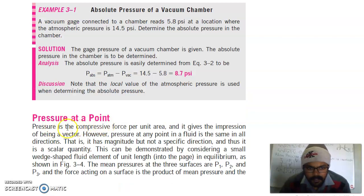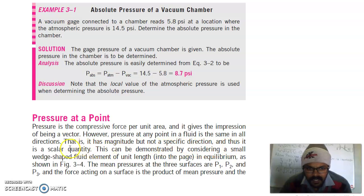Pressure at a point. Pressure is compressive force per unit area, and it gives the impression of being a vector. However, pressure at any point in a fluid is the same in all directions. That is, it has magnitude but no specific direction, and thus it is a scalar quantity. This can be demonstrated by considering a small wedge-shaped fluid element of unit length in equilibrium as shown in the figure.